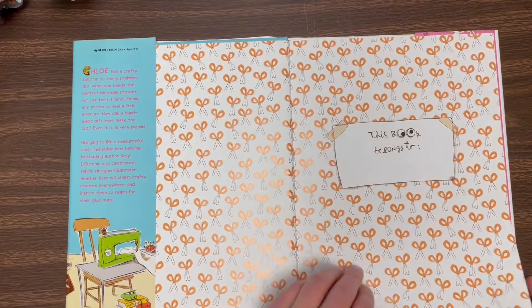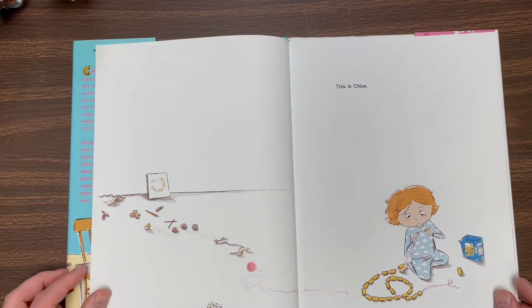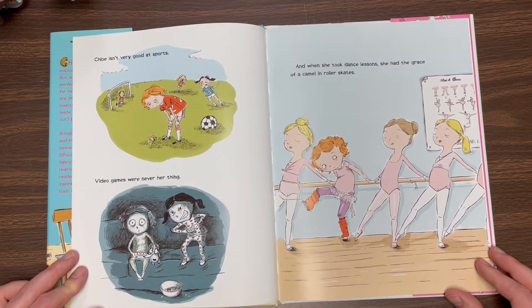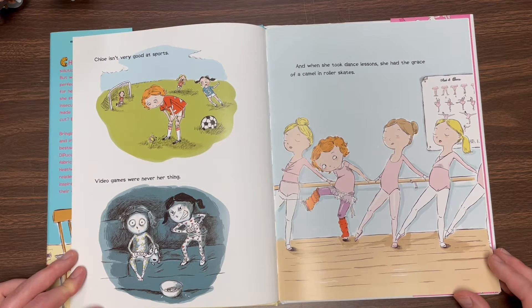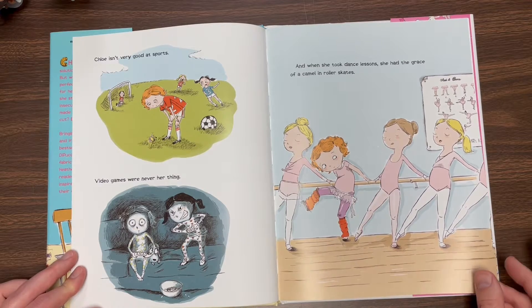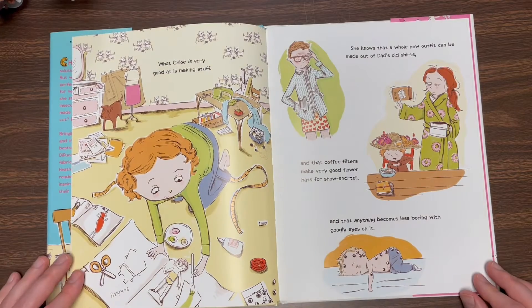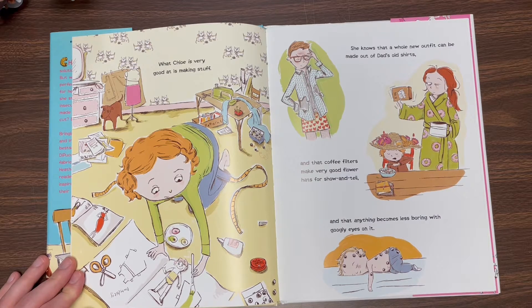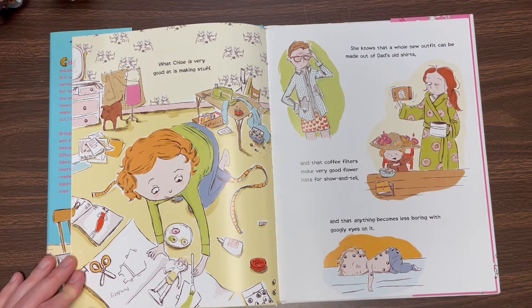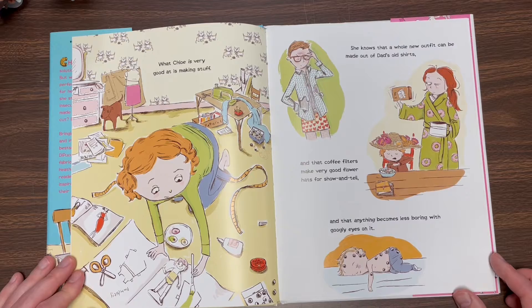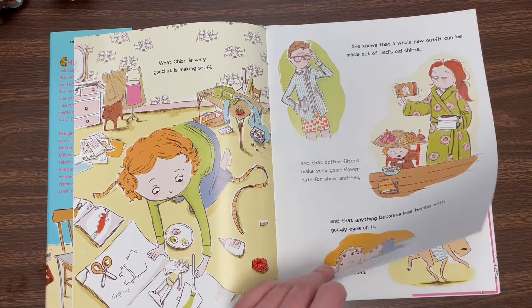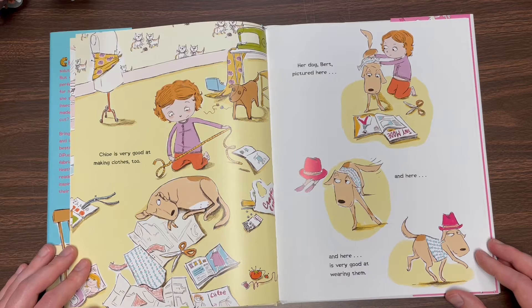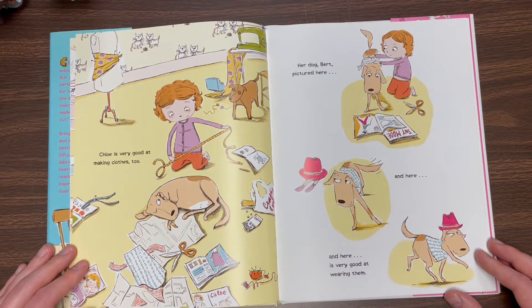Crafty Chloe. This is Chloe. Chloe isn't very good at sports. Video games were never her thing. And when she took dance lessons, she had the grace of a camel in roller skates. What Chloe is very good at is making stuff. She knows that a whole new outfit can be made out of dad's old shirts, and that coffee filters make very good flower hats for show and tell, and that anything becomes less boring with googly eyes on it. Chloe is very good at making clothes, too. Her dog, Bert, pictured here and here and here, is very good at wearing them.